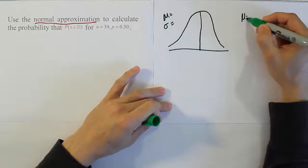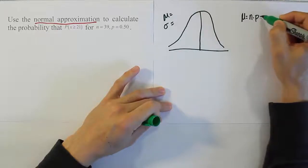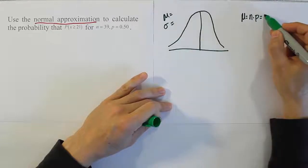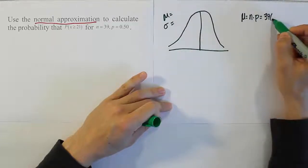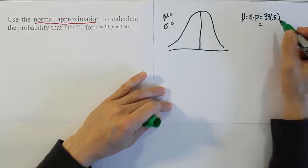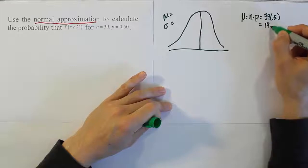So our mean, remember, is n times p. That's under the binomial probability formula. So n times p is going to be 39 times 0.5, and it's going to give you half of 39. So in this case, we'll end up with 19.5. So we have the answer 19.5.